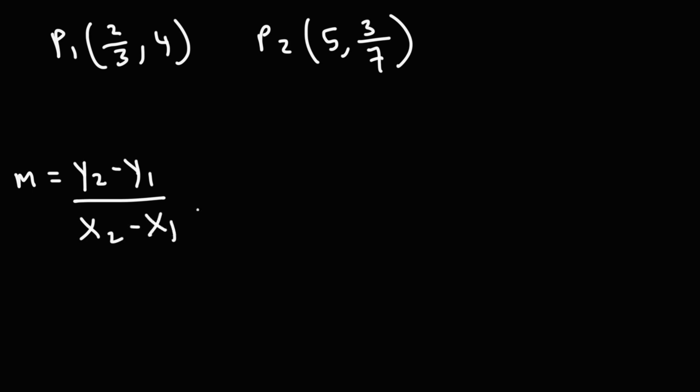Now let's work on one more example, but this time we're going to have fractions. Go ahead and calculate the slope of the line that passes through those two points using the same formula. Now the process is the same, but there's going to be more algebra involved in this particular example.